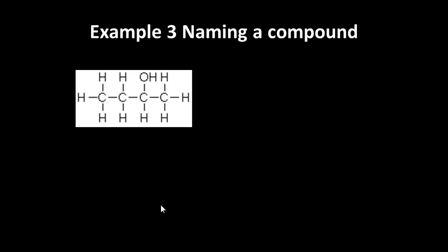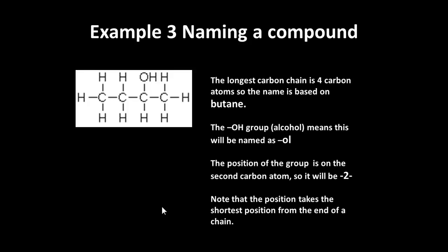Final example here, fairly straightforward. This is a four carbon chain so it's going to be based on butane. The OH group which is actually an alcohol group means that the terminal name is going to end in OL and the position of the group is on the second carbon we count it nearest to the end. Now it's from the shortest position from the end of the chain so it's butane 2-ol.